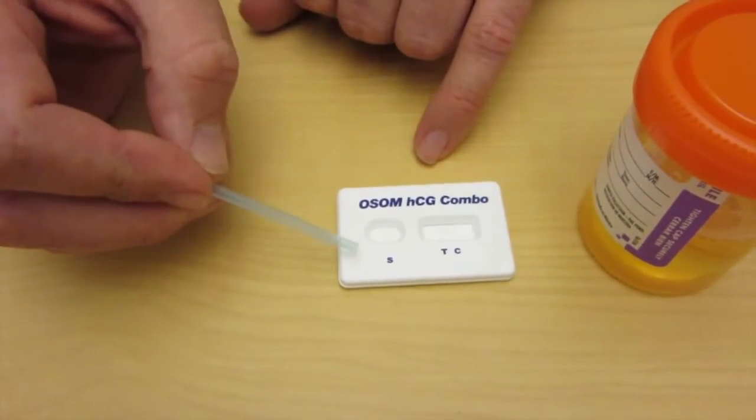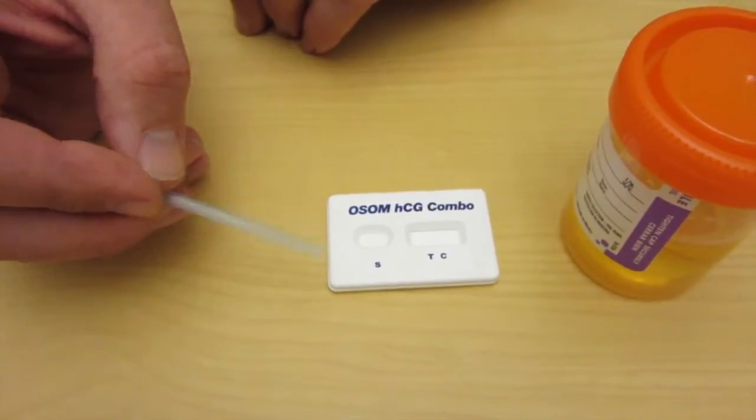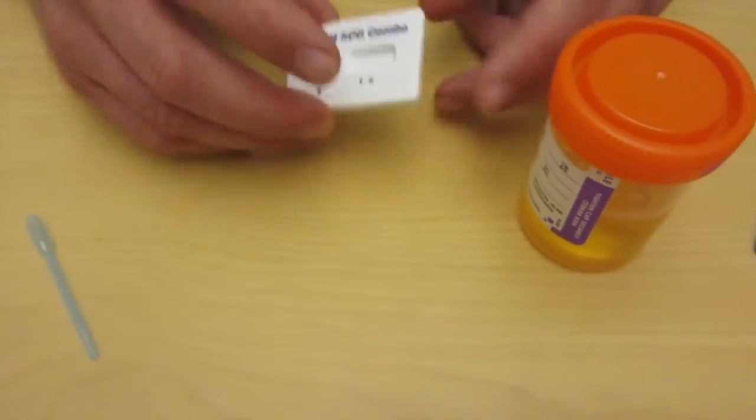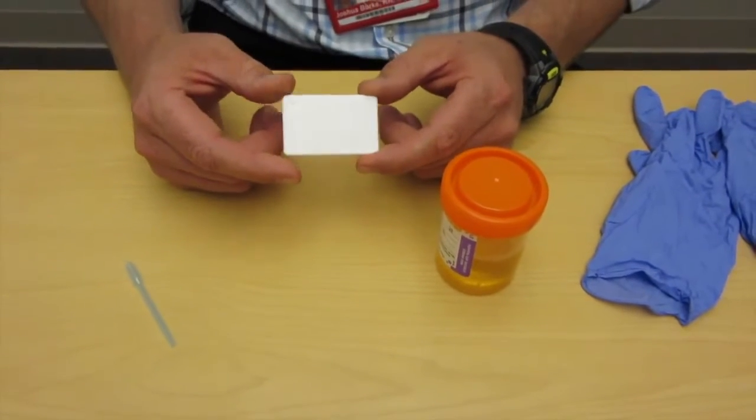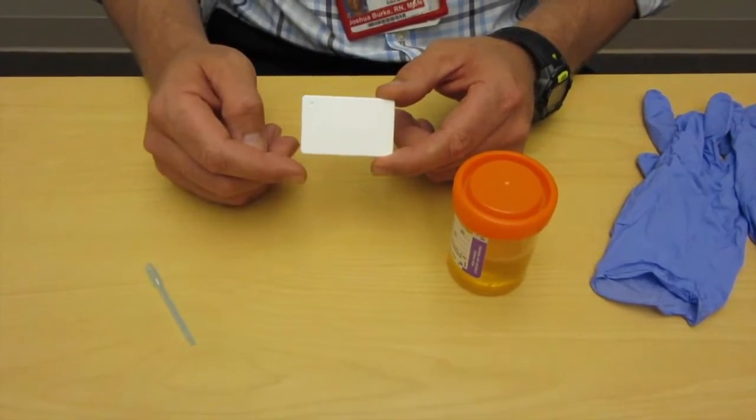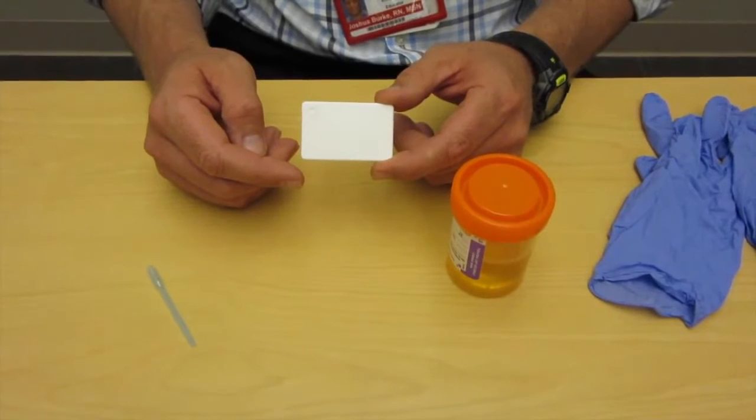If you ever leave these out of your immediate possession, it's really important to label them. You can put a generic label on the back that tells you which patient it's for. You don't want to come back and see four of these in the same test area with one person being pregnant and not know who it is.